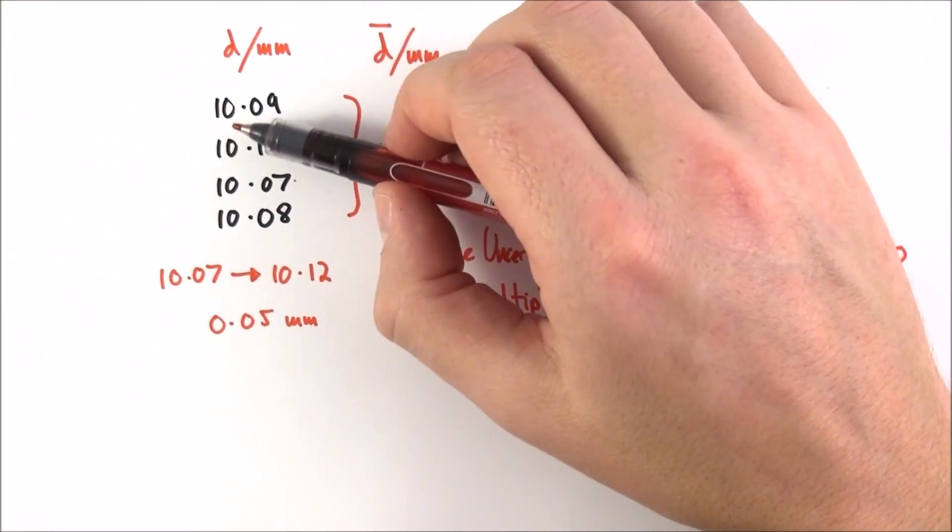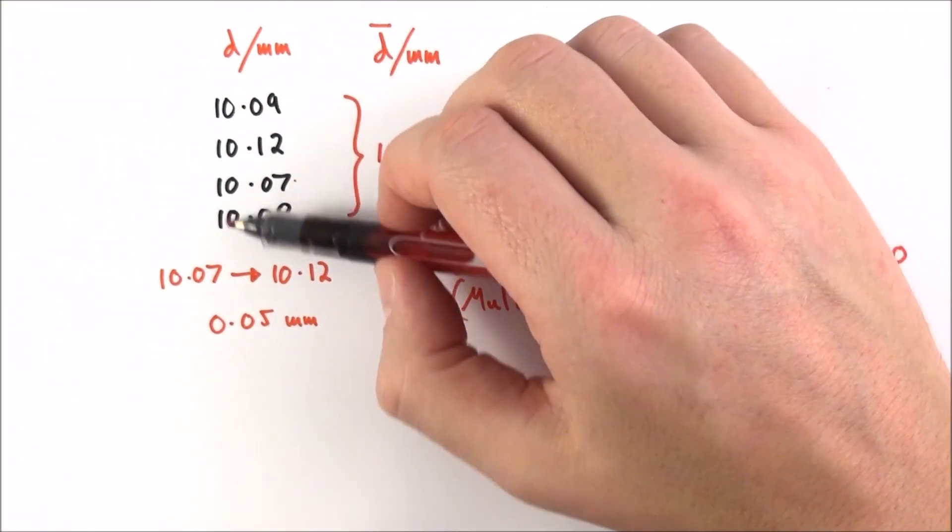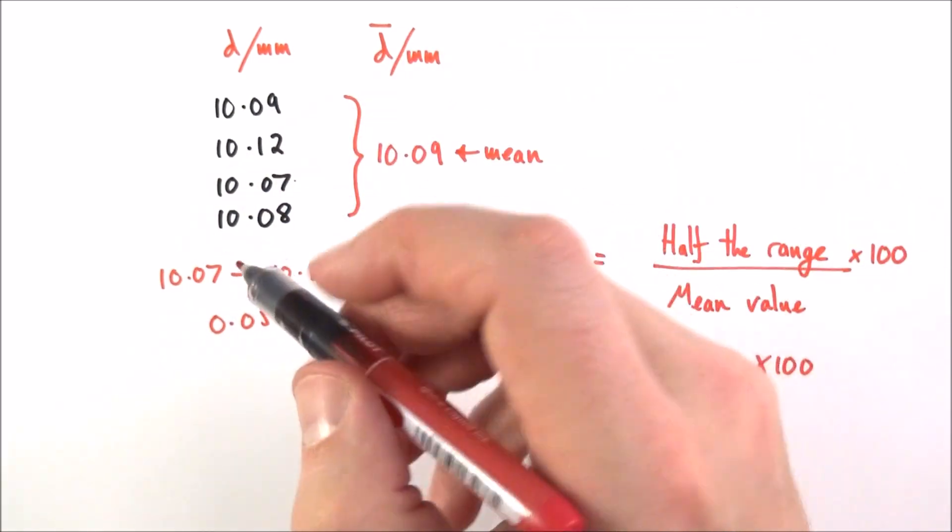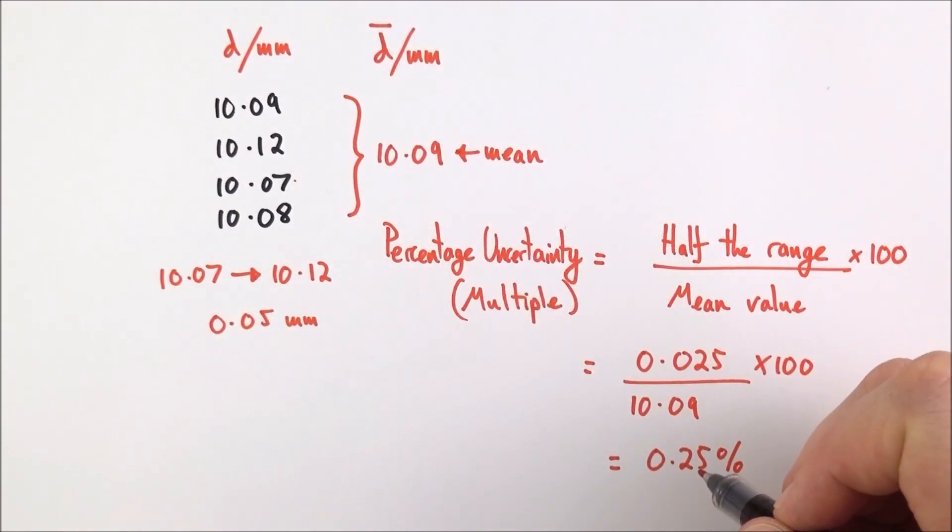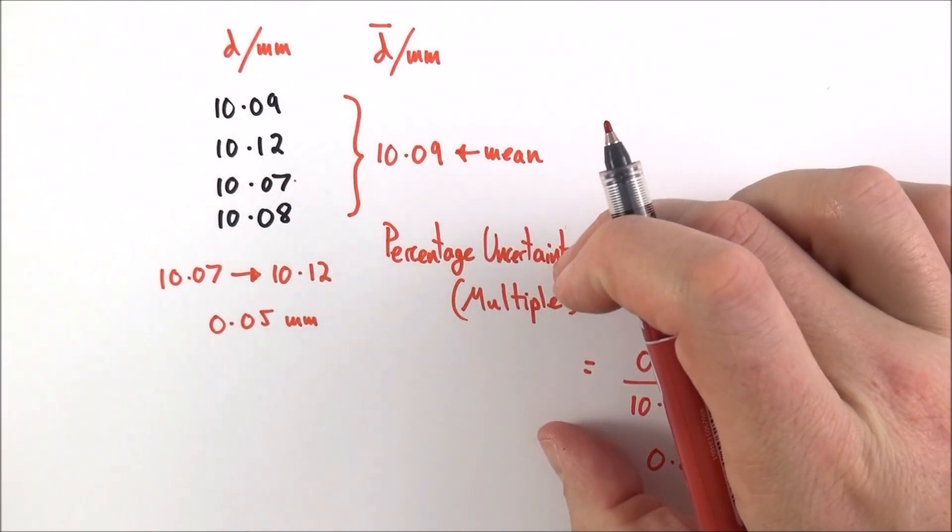If these values fluctuate by a large amount, so maybe they went from 10.01 up to 10.51, we would then have a larger range, and therefore half the range would be bigger, and therefore we'd have a bigger percentage uncertainty.